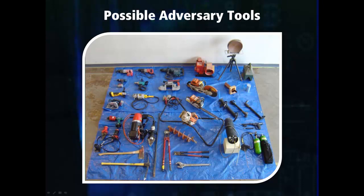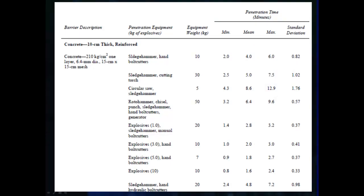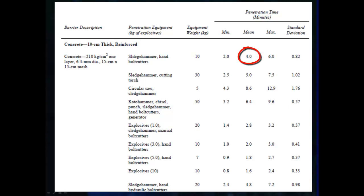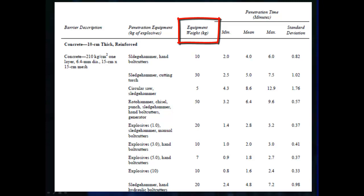This is an example of a data sheet on the delay characteristics of a barrier. The barrier is a 10 centimeter thick concrete wall reinforced with 6.4 millimeter rebar at 15 centimeter intervals. You can see that the time to penetrate the wall varies greatly based on the equipment used. With a sledge hammer and bolt cutters, it takes on average 4 minutes to penetrate the wall, while with 10 pounds of explosives it takes 96 seconds. The data sheet also includes the total weight of equipment required to breach the barrier, which is important when analyzing multiple barriers because the adversary is limited by how much weight they can carry.